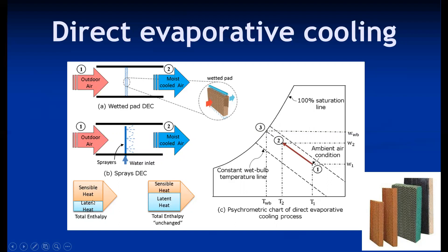In adiabatic humidification, at the inlet the air has a higher amount of sensible heat and lower latent heat. As it flows through the wetted pad, sensible heat is reduced and latent heat increases, so total enthalpy remains constant. If the wetted pad or sprayed water temperature equals the wet bulb temperature of entering air, this ideal process occurs. If below WBT, enthalpy rises; if above WBT, enthalpy drops. The ideal adiabatic humidification process has no change in enthalpy. Direct evaporative cooling is mainly used in desert conditions when the atmosphere is hot and dry.